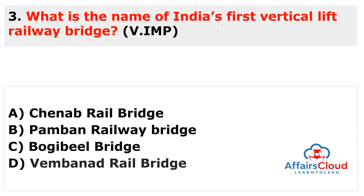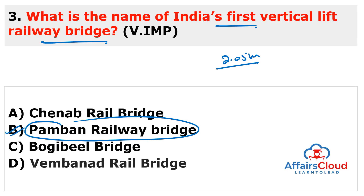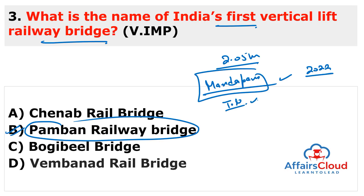Next question: What is the name of India's first vertical lift railway bridge? The answer is the Pamban Railway Bridge. The Ministry of Railways announced that the construction of the new 2.05 km Pamban Railway Bridge in Mandappam, Tamil Nadu, will be completed by March 2022. The bridge will connect Rameshwaram island to the mainland in Tamil Nadu.